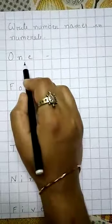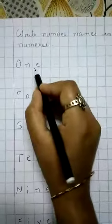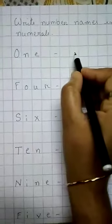Already number names given, we have to write numerals. So, spelling is number name, we have to write it in number.